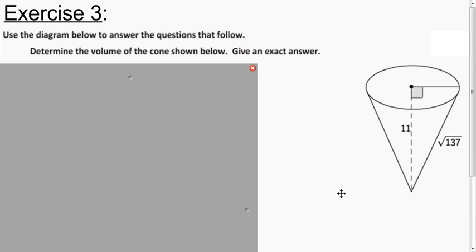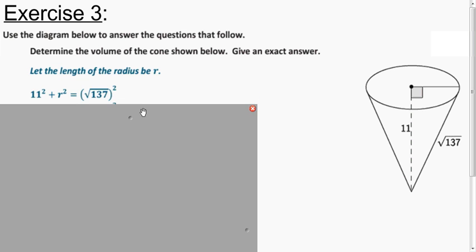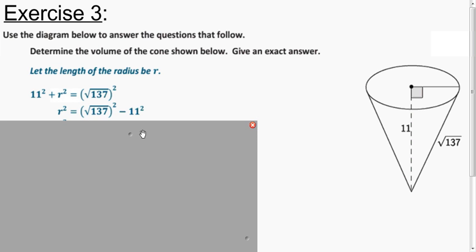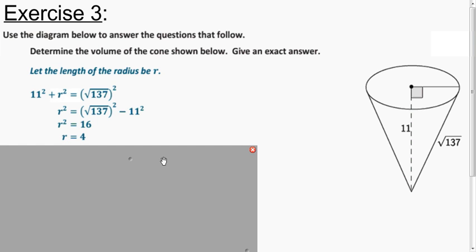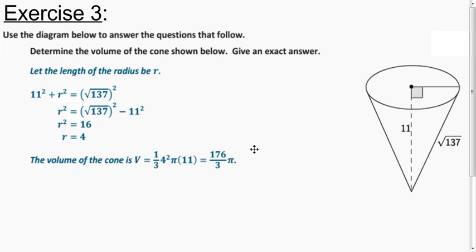Try to find the volume of this cone, and then I'll show you my solution. In this case, they don't directly give us the radius, but that's okay because we have a right triangle. The square root of 137 is the hypotenuse, so to figure out the radius we use Pythagorean theorem. We solve and get that the square root of 16 is 4. We plug 4 into our formula for volume and get 176/3 π.